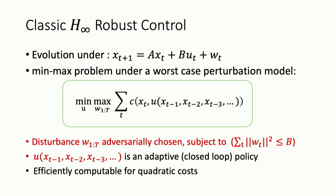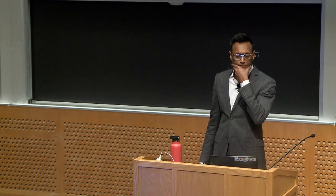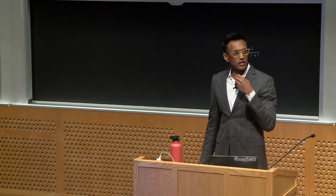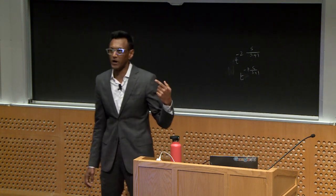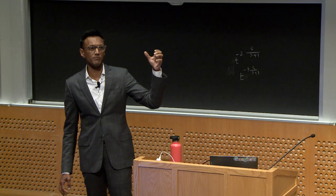What is H-infinity control? It's basically a min-max game. We're trying to find some adaptive controller u — the control at time t as a function of the previous states we've seen — and then nature gets to be adversarial, subject to the constraint that the sum of squares of the disturbances are bounded. This is a worst-case notion of how to be robust against some kind of bounded disturbances, with no distributional assumption. For the case of quadratic cost, this is efficiently computable.